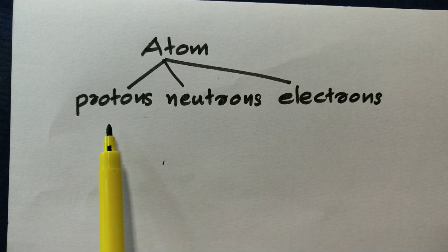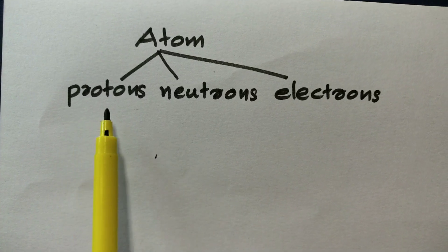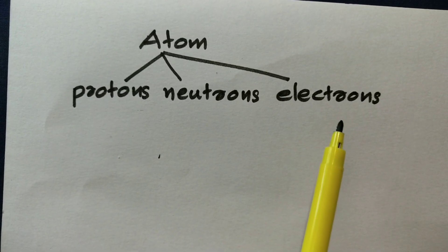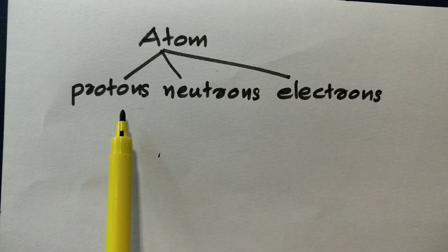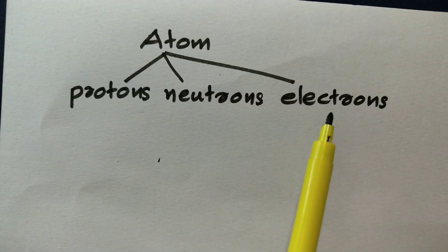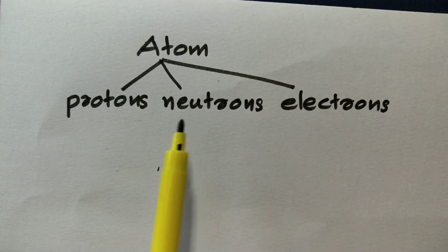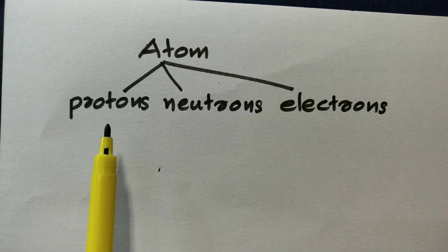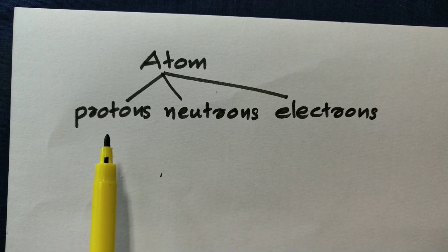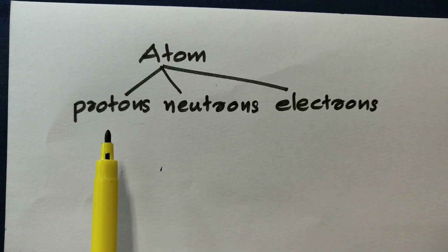We are going to study the 3 particles: Proton, Neutron, and Electron. Proton and Neutron are stable in the center of the nucleus.